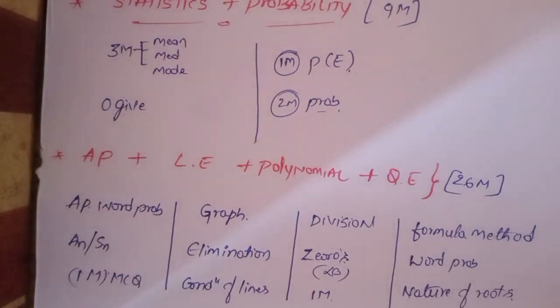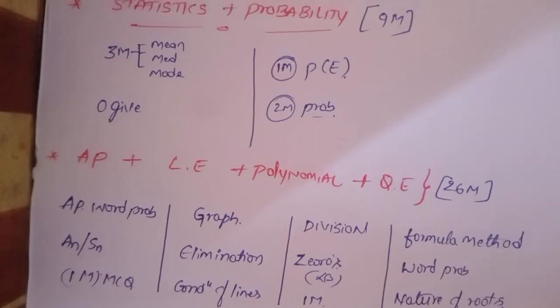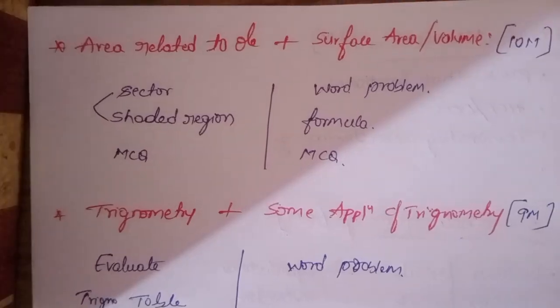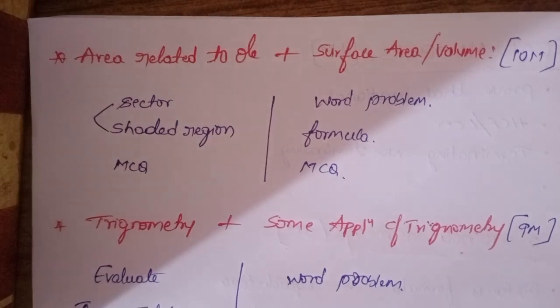Next polynomials will be one division and zeros of polynomials, sum product, one multiple choice. Lastly quadratic equation formula method, one compulsory question. Next word problem and nature of roots. In this concept, application level questions chances are higher. Word problem is 4 marks or 3 marks for quadratic equation.